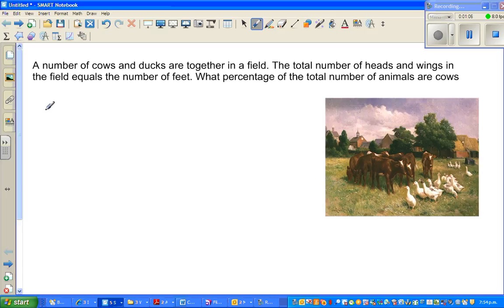Suppose let us make up some columns. Suppose this is cow or cows. Then you've got ducks. Then you've got total number of head plus wings. So I'll write only H plus W. H stands for head and W stands for wings. And the final is feet. So this is a trial and error method.